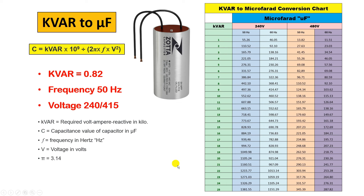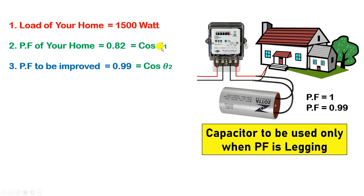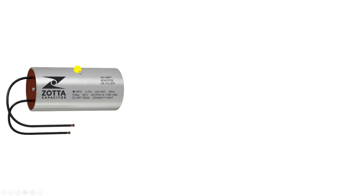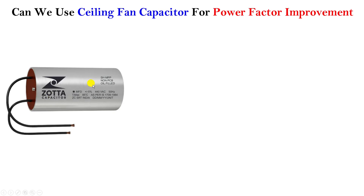To summarize: for a 1500 watt home load with power factor 0.82, to improve it to 0.99, we need at least a 40 microfarad capacitor. Now, can we use the capacitor from a ceiling fan for this purpose? The answer is no — a ceiling fan capacitor is not designed for continuous use with heavy load for power factor improvement. Connecting it may cause it to blast.